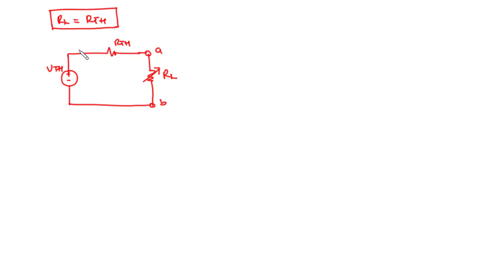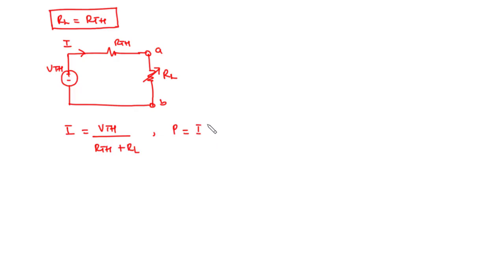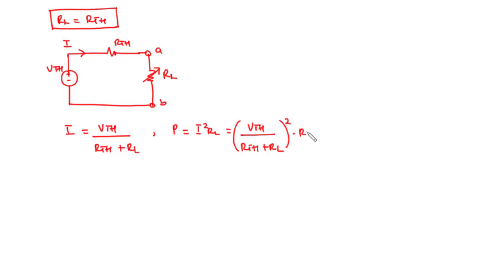Let's find the current that flows through the load resistor. The current I that flows through the load resistor is given by I equals VTH divided by RTH plus RL. If we want to find the power delivered to this load, that is equal to I squared times RL. Substituting, we have I equals VTH over RTH plus RL, so power equals the square of that quantity times RL.